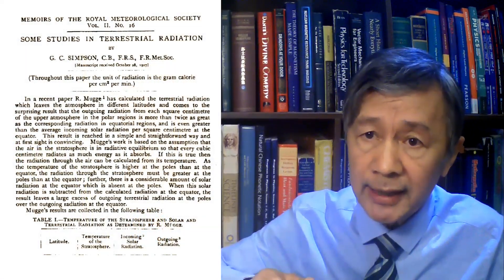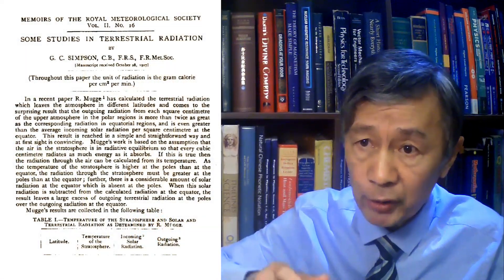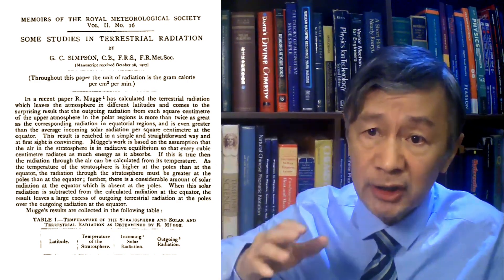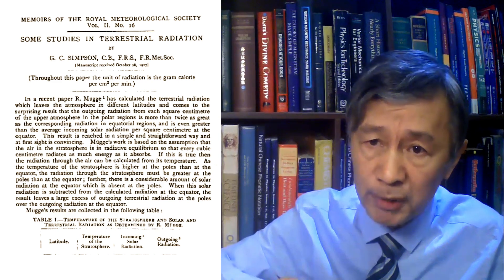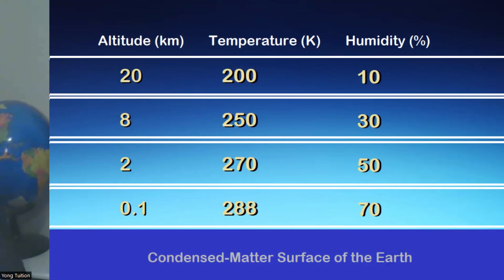Similar to Simpson's work in 1927, only water vapor in the troposphere is considered here, because it is the dominant infrared absorber and emitter. In other words, we can omit the contribution from CO2, ozone, and other trace gases as a pretty good approximation. To do so, we need to use a proper humidity for each model layer based on observations. For demonstration purposes, I simply use 0.7, 0.5, 0.3, and 0.1 for the humidity for each of the four layers, as shown in this diagram.